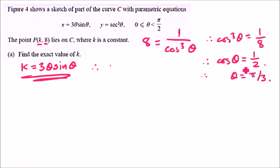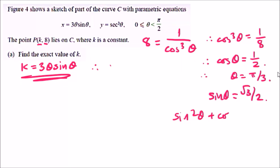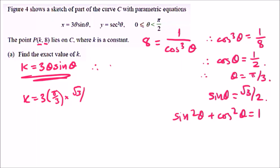Another way is to find sinθ directly using the identity sin²θ + cos²θ = 1. Plugging in cosθ = 1/2 and rearranging, you get sinθ = √3/2. So now putting all these values together: k equals 3θ sinθ = 3 × (π/3) × (√3/2). The 3s cancel out, leaving k = π√3/2.